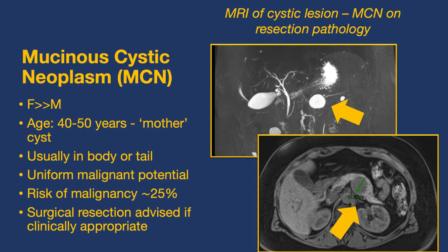The other type of mucinous neoplastic cyst we see a lot is an MCN — mucinous cystic neoplasm. These are 95 to 100% female, usually in the tail of the pancreas, and unlike IPMNs they have a uniform malignant potential. Regardless of size or rate of growth, consensus guidelines recommend resection of these cysts, assuming the patient is fit. So that's a whistle-stop tour of the different types of pancreatic cyst.